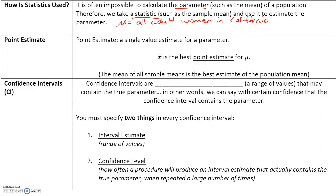Instead, we could design a study that gathers a random sample of 1,000 women and calculate the sample mean x-bar — the mean height of just this sample. This mean height of these 1,000 women won't be exactly the mean height of all adult women in California, but it will be a good estimator of the parameter. Remember, a parameter is a measurable characteristic of a population, whereas x-bar is a statistic, a measurable characteristic of a sample.